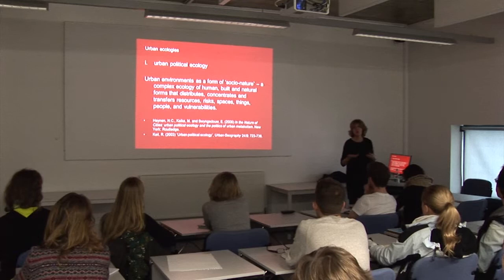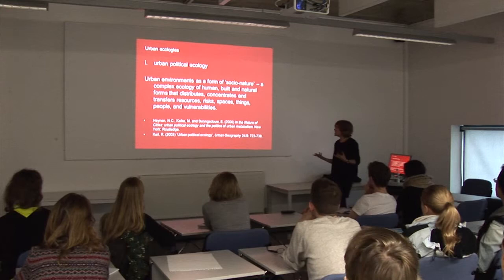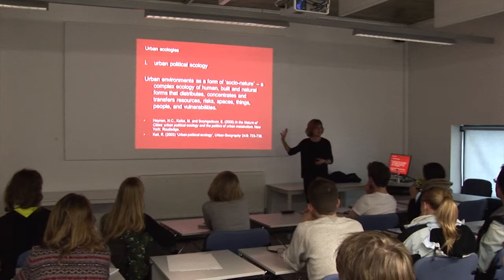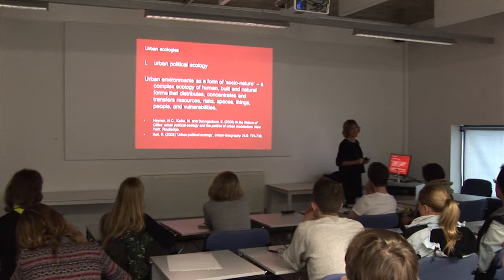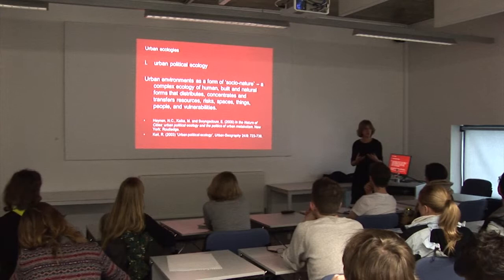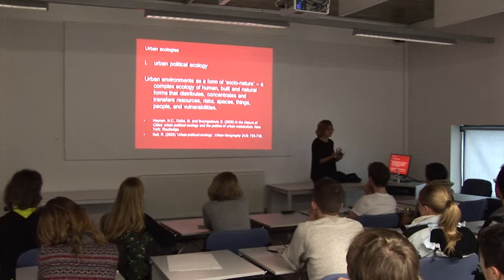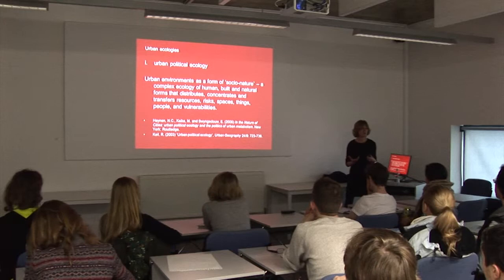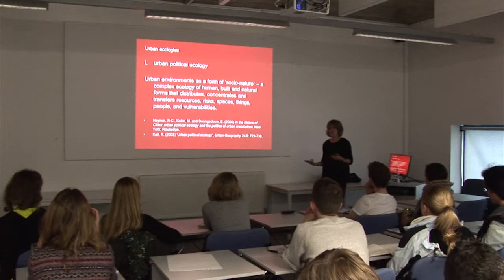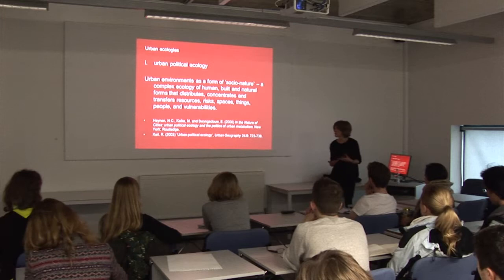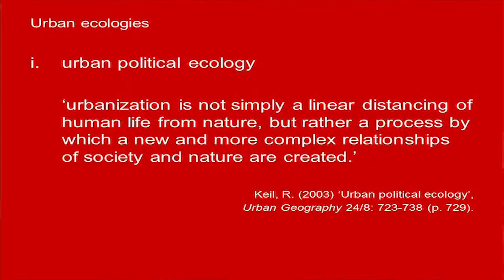These systems of distribution, concentration, and transfer circulate different kinds of elements in the city: materials, resources, risks, spaces, things, people, and vulnerabilities. This is my encapsulation of urban political ecology — the human, the non-human, the natural, the material. But also the way that these distributions are not harmonious, not simply functional interdependencies, but tend to be fairly inequitable. They create disparities, uneven distributions of vulnerability and risk, as well as of benefit and resource.